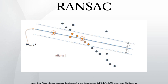A basic assumption is that the data consists of inliers, that is, data whose distribution can be explained by some set of model parameters though may be subject to noise, and outliers, which are data that do not fit the model. The outliers can come, for example, from extreme values of the noise or from erroneous measurements or incorrect hypotheses about the interpretation of data.